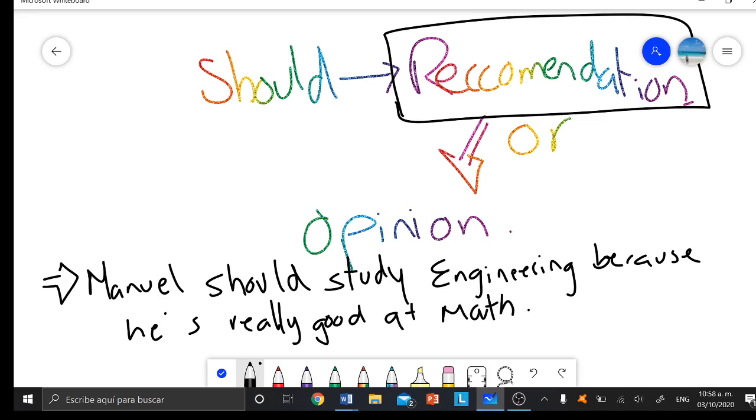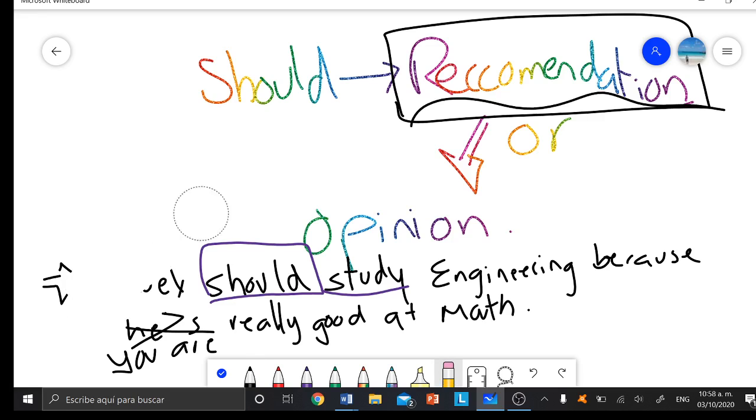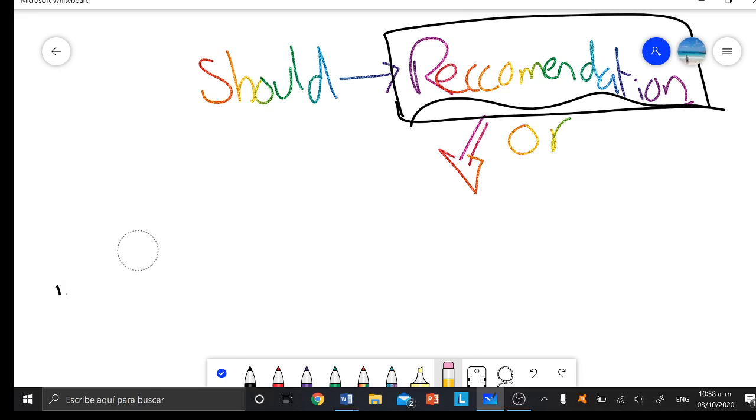The example says Manuel should study engineering because he's really good at math. Manuel debería estudiar una ingeniería porque es muy bueno en matemáticas. In this case, me faltó aquí ponerle Manuel coma. Manuel, you should study engineering because you are really good at math.